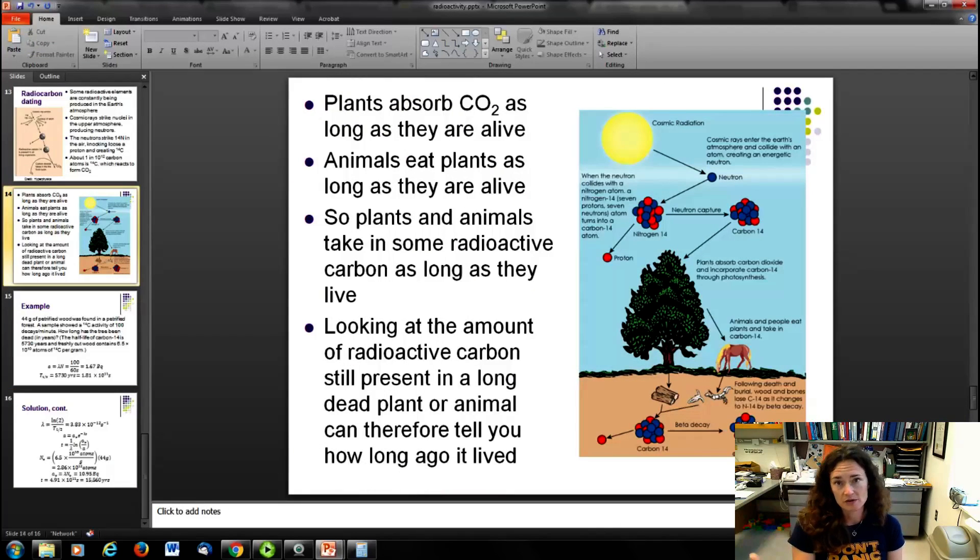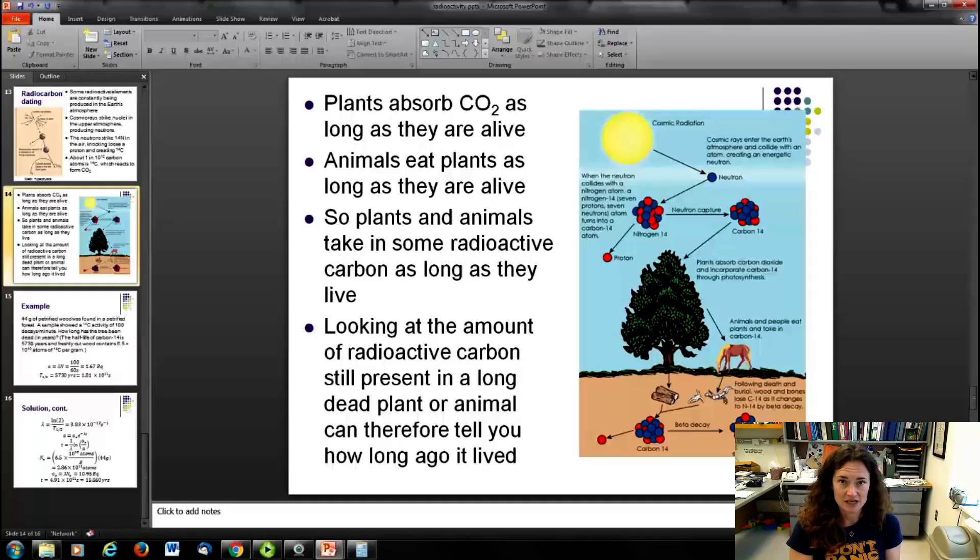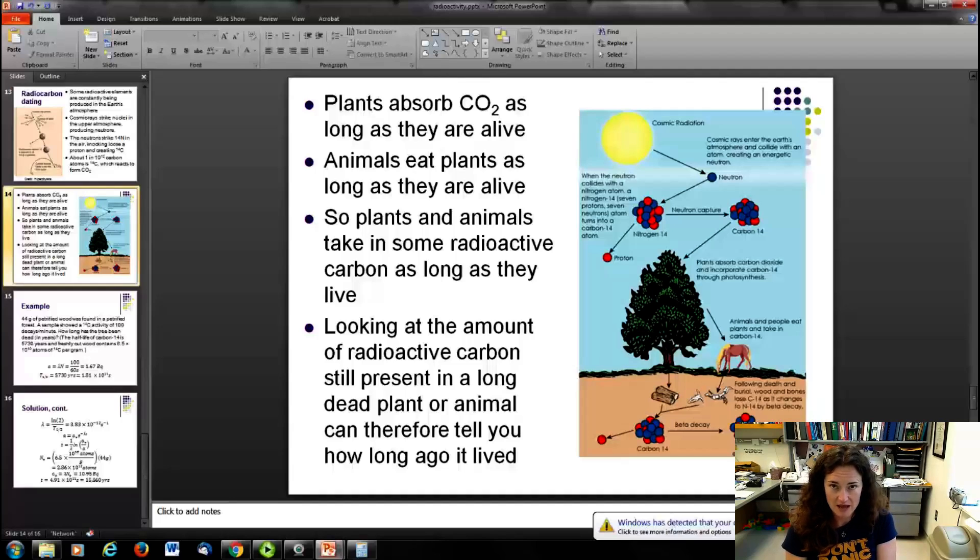Now, plants are going to absorb carbon dioxide as long as they're alive. It's just what they do. And then animals are going to eat plants as long as they're alive. Or animals eat other animals that have eaten plants. You get the point. At any rate, our supply of carbon is constantly being replenished. So as long as plants and animals are alive, they're taking in radioactive carbon. And so if you look at the amount of radioactive carbon that a sample contains and compare it to the activity of a live sample, then you'll see how long that animal or plant has been dead. So you compare a live activity of carbon-14 versus a dead one and compare the two activities and you can get an estimate of how long ago that animal or plant died. And this is the basis of radioactive carbon dating.